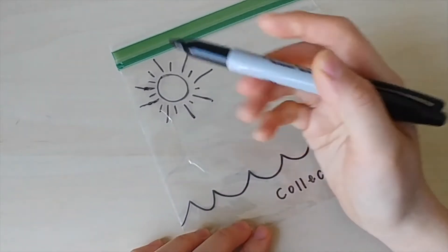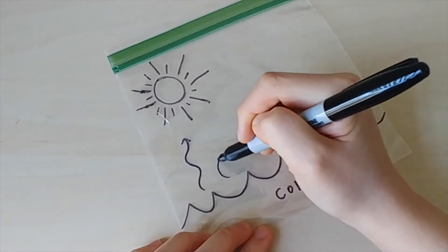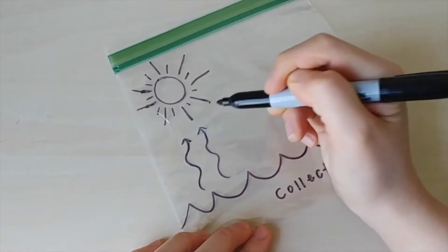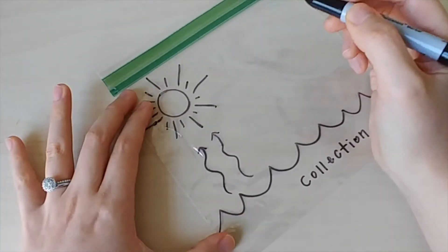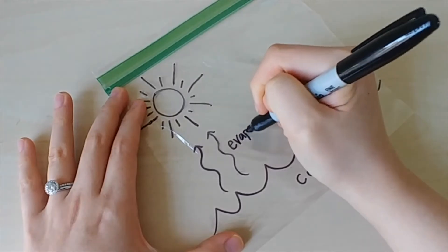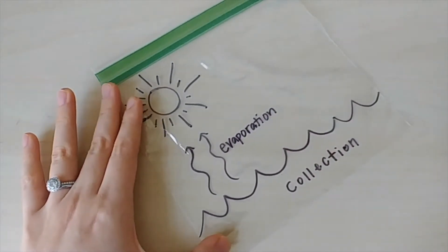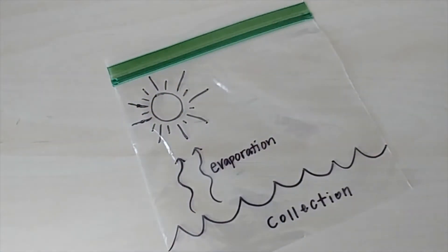It undergoes evaporation. This is when liquid water changes to the gas form of water, also known as water vapor. So we'll draw some curved arrows to represent this and label evaporation, E-V-A-P-O-R-A-T-I-O-N.